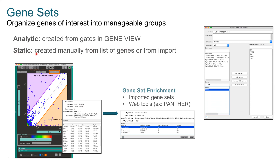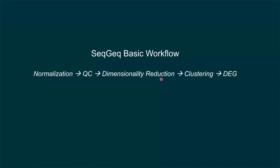There's also a static gene set, created manually from a list of genes or via import. For example, if I know I'm interested in T cell lineage genes, I can just type the genes of interest and add them to a list. Then when I'm in cell view or gene view, I can quickly navigate to those genes using this gene set. Gene sets are simply ways to group genes of interest into a manageable group, whether found by discovery-based gating or curated manually.